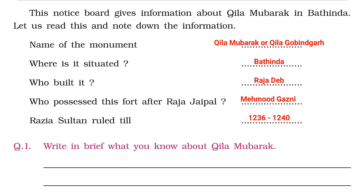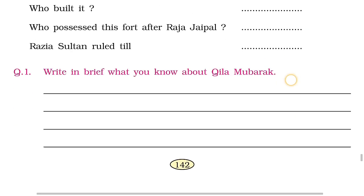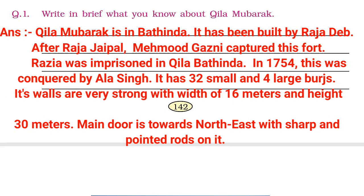This notice pole gives information about Kila Mubarak and Bathinda. Let us read these and note down the information. The name of the monument is Kila Govindgarh and Kila Mubarak. It is situated in Bathinda and was built by Raja Dev. After Raja Jaipal, Mahmud Ghazni possessed this fort. Razia Sultan ruled from 1236 to 1240. For the brief answer: Kila Mubarak is in Bathinda, built by Raja Dev. After Raja Jaipal, Mahmud Ghazni captured it. Razia Sultan was imprisoned here. In 1754, it was conquered by Allah Singh. It has 32 small and 4 large towers. Its walls have a width of 16 meters and height of 30 meters. The main door faces north east with sharp and pointed rods.